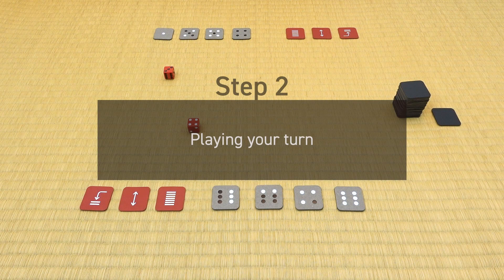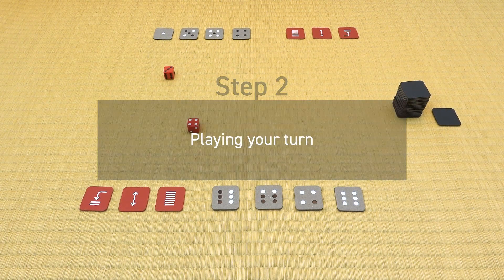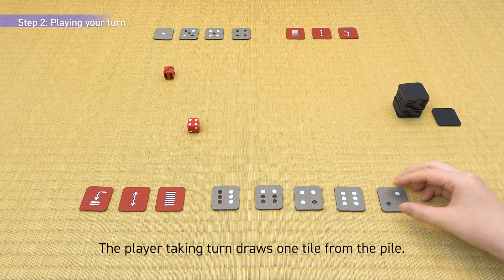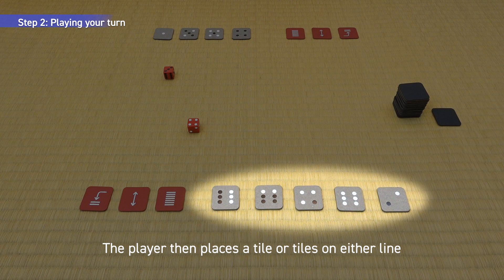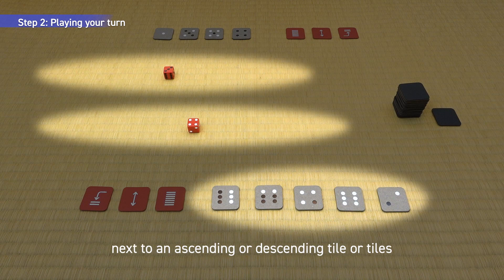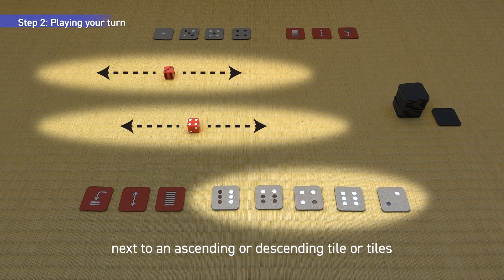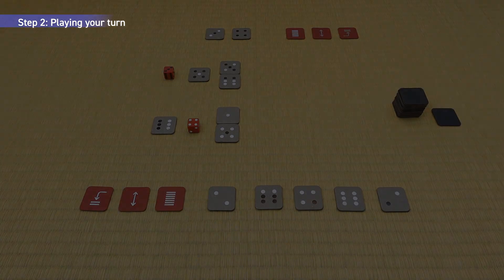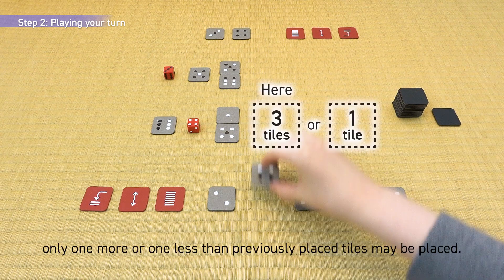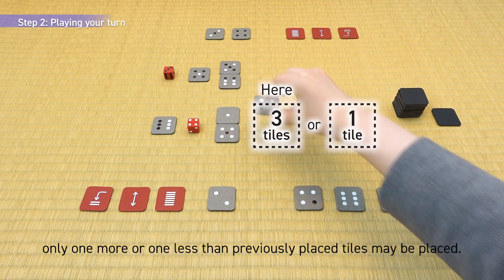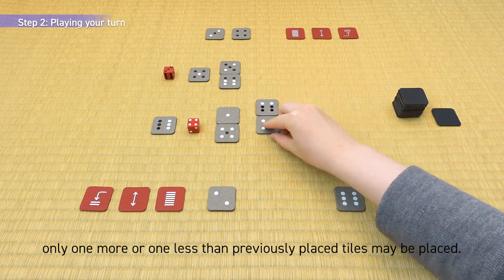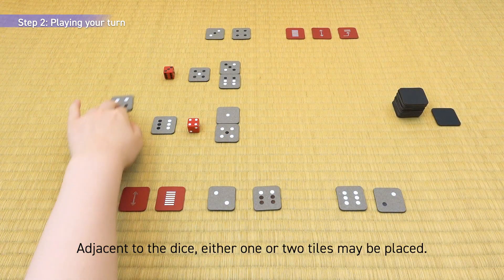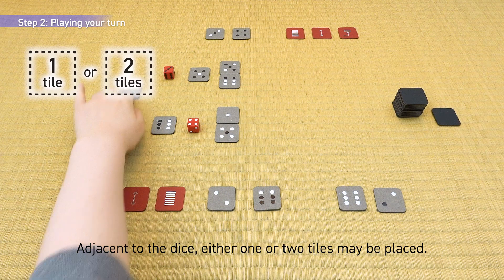Step 2: Playing your turn. The player taking turn draws one tile from the pile. The player then places a tile or tiles on either line next to an ascending or descending tile or tiles, or the player can use an action card. When placing tiles, only one more or one less than previously placed tiles may be placed. Adjacent to the dice, either one or two tiles may be placed.